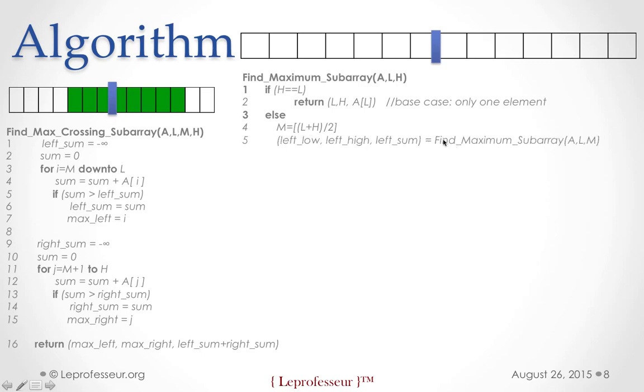And then you call the same function or algorithm find maximum sub-array. But here see notice the difference. Instead of putting the high H, you are using M. So you are basically trying to solve recursively this left sub-array. And now the solution where the sub-array crosses your midpoint, that we already found here. We just call this function.